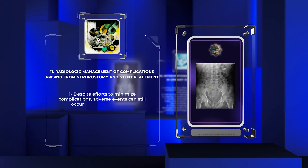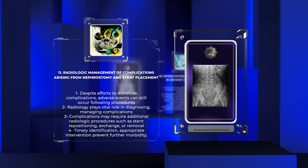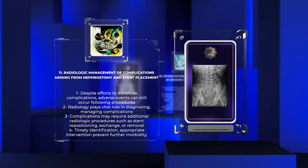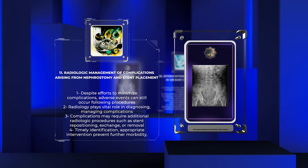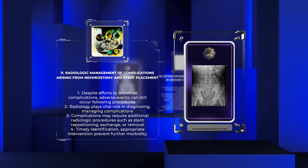Despite the efforts to minimize complications, adverse events can still occur following percutaneous nephrostomy and ureteral stent placement. Radiology plays a vital role in diagnosing and managing these complications effectively. Complications such as stent migration, stent occlusion, urinary leaks, or infection may require additional radiologic procedures, such as stent repositioning, exchange, or removal. Timely identification and appropriate intervention help prevent further morbidity and ensure optimal patient outcomes.